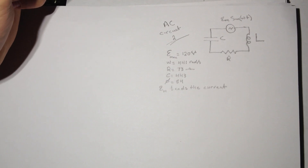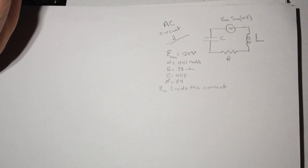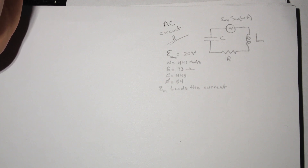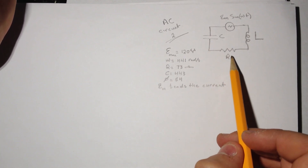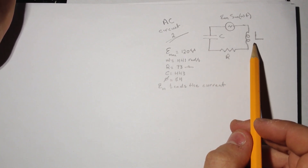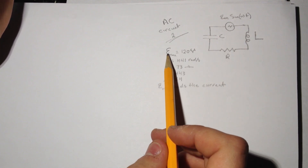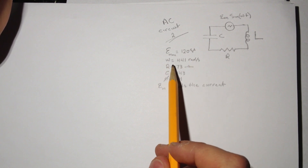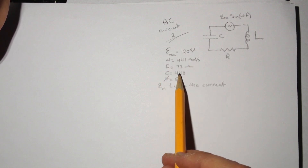Hi guys, this is another tutorial for the Smart Physics problem called AC Circuit 2. It has a generator, capacitor, resistance, and inductor. The information given includes the voltage max for the generator, omega for the circuit, the resistance R, and capacitance.